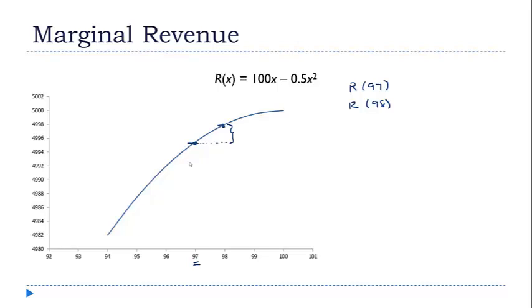I can get out my calculator and figure out what R of 97 and R of 98 are, but that's going to get a little tedious, especially if I'm trying to do this for a lot of different numbers. So here's what I'm going to do. I'm going to draw the tangent line here at that point that I'm interested in. I want you to notice that this distance, the distance between my tangent's value and 97, is really close to the distance between the function's value and 97. So the tangent line is giving me actually a really good approximation of the marginal value.